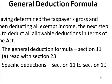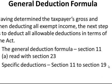Allowable deductions and allowances are housed from Section 11 to Section 19 of the Income Tax Act, read along with Section 23. When I speak about the Income Tax Act, it's the Income Tax Act number 58 of 1962 that we speak about.